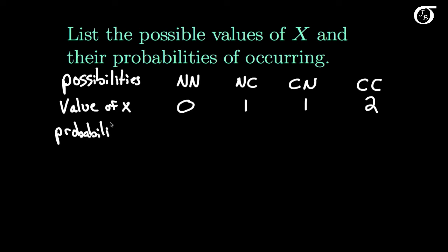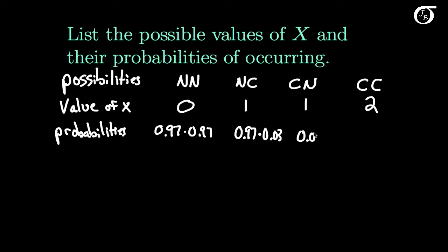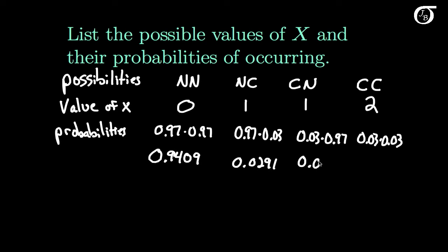If we are sampling randomly and independently, and the probability that a person is under correctional supervision is 3%, then the probability they're not is 97%. We can simply multiply those probabilities together. The probability of N then N is 0.97 × 0.97 = 0.9409. The probability of N then C is 0.97 × 0.03 = 0.0291. The probability of C then N is 0.03 × 0.97 = 0.0291. And the probability of two C's is 0.03 × 0.03 = 0.0009.